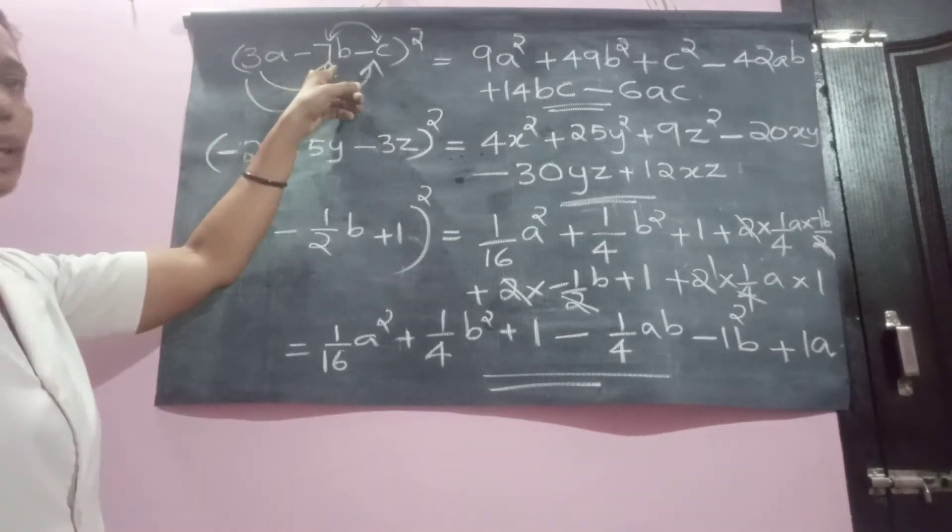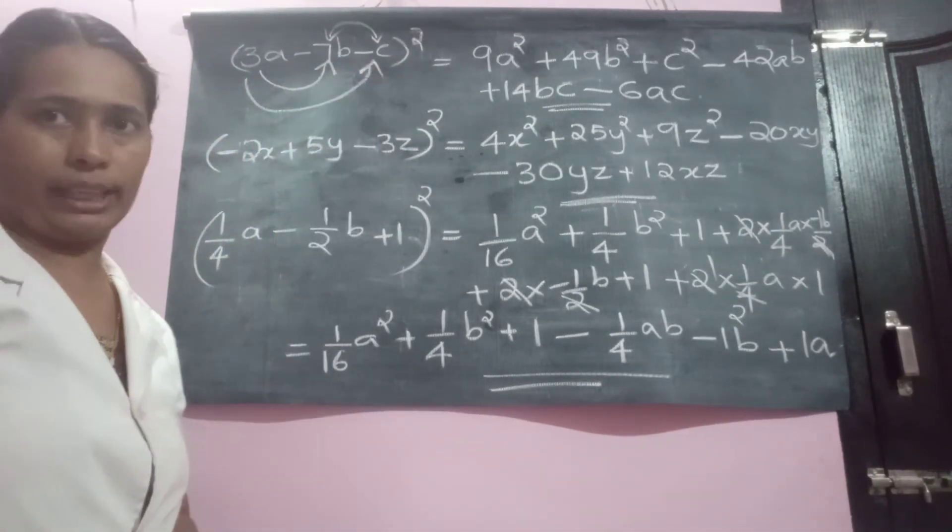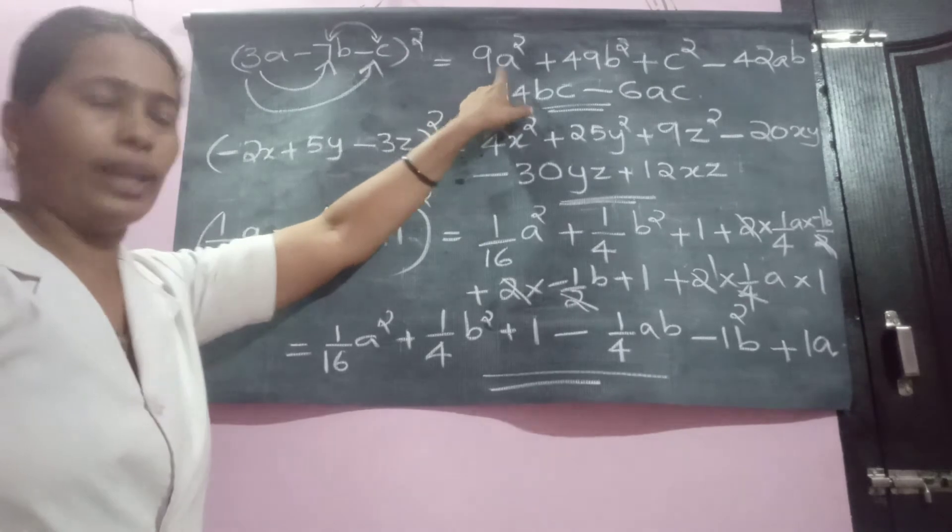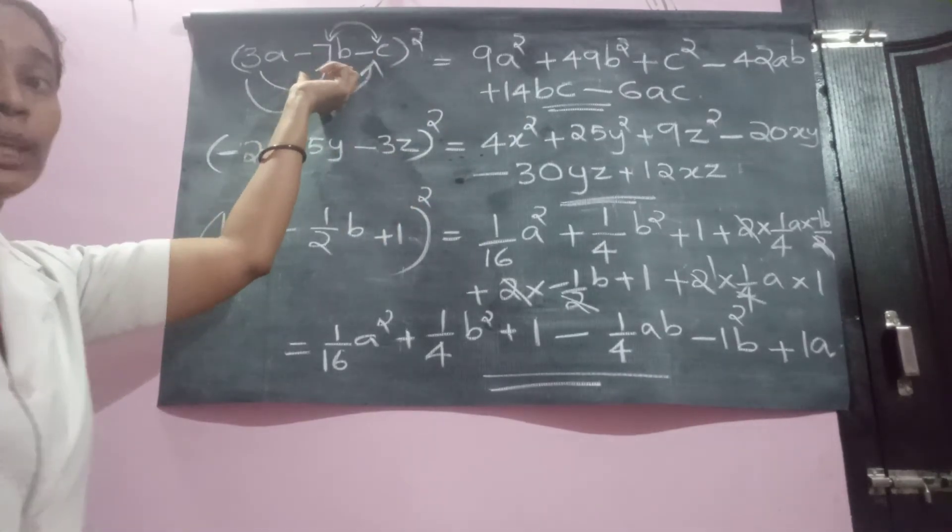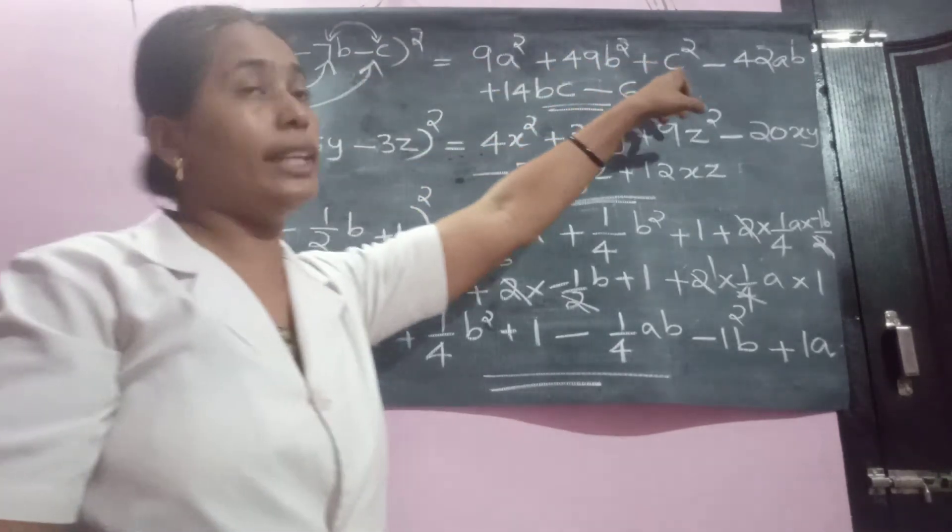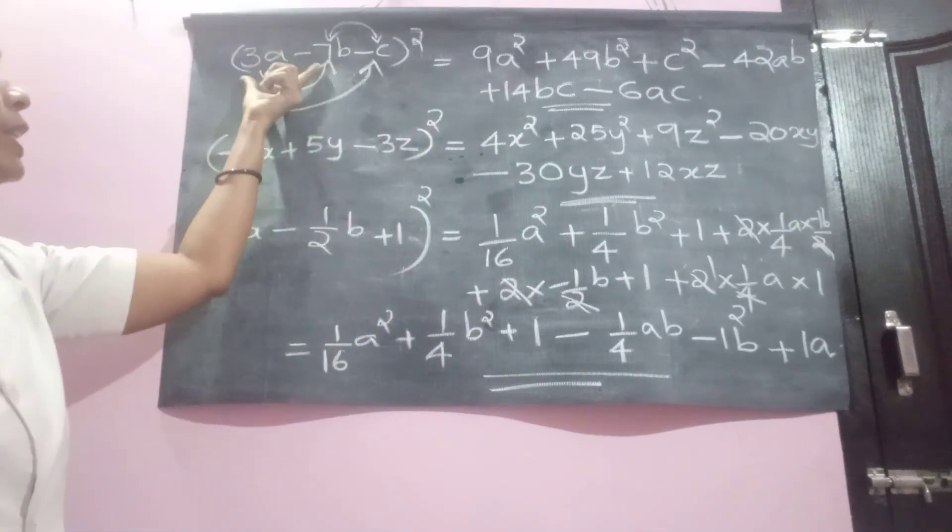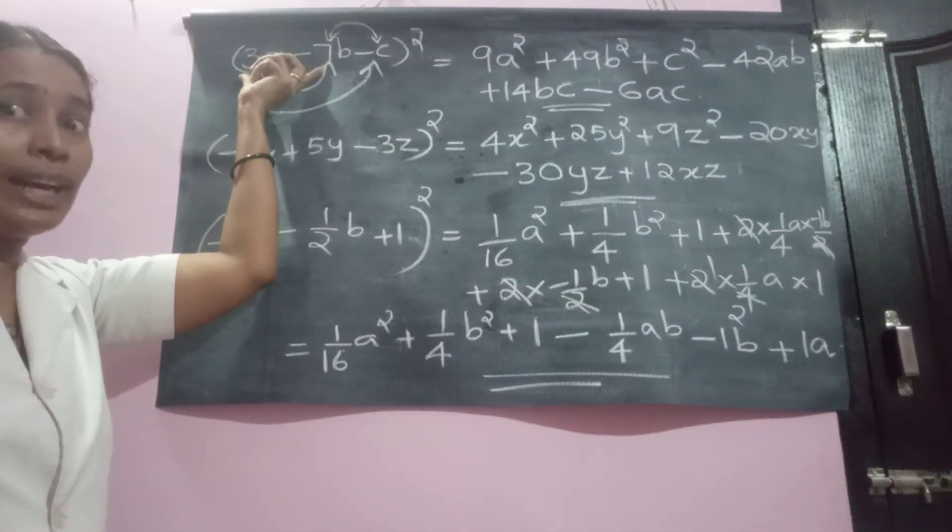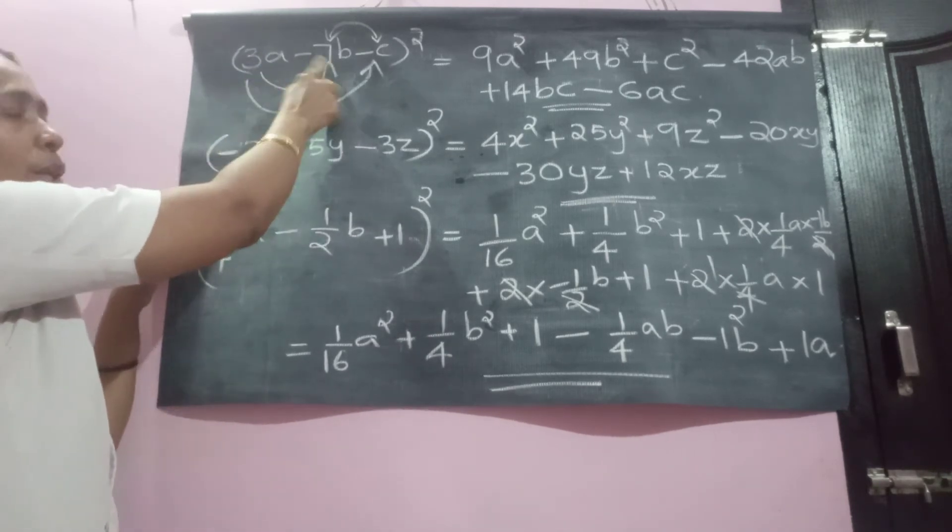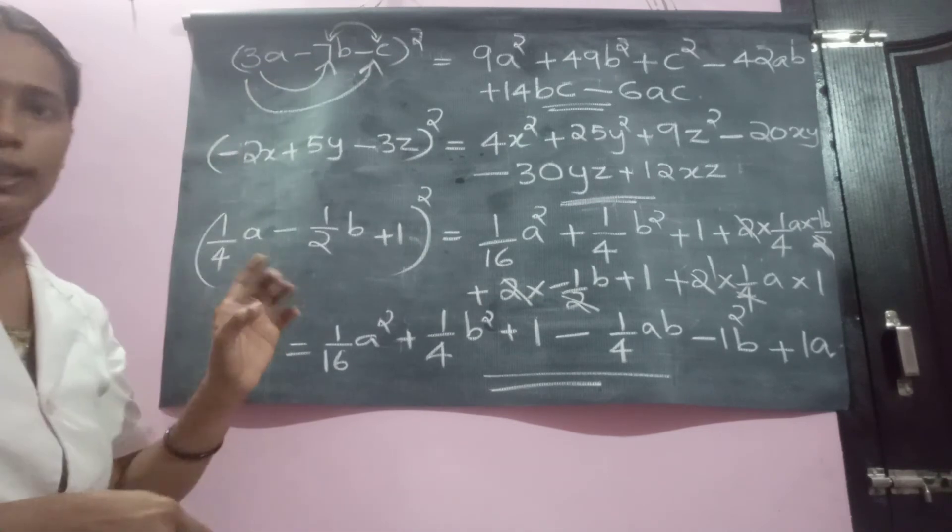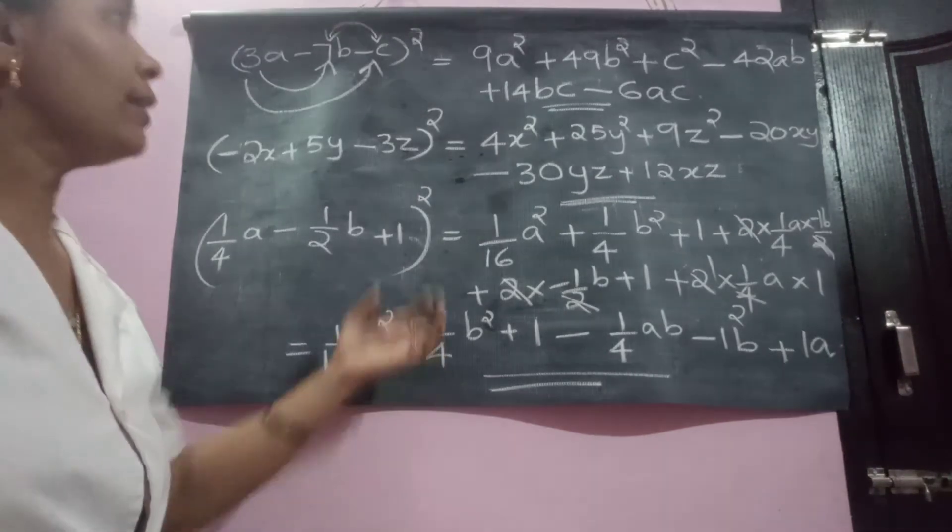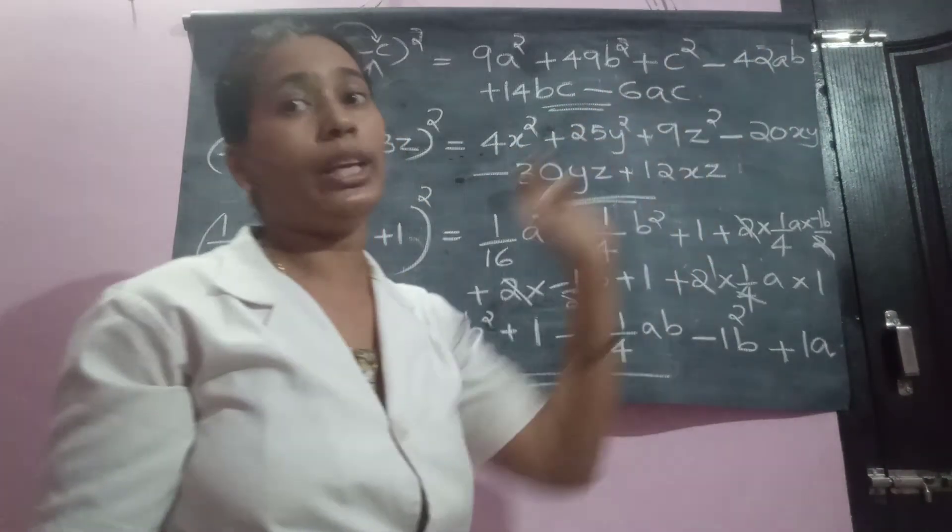Here, 3A minus 7B minus C, the whole square. First, 3A whole square. 3A whole square is 9A square. Square of negative 7B is positive 49B square. Square of negative C is positive C square. Then product of first two is negative 21AB. First, you multiply sine. Sine is negative. Number 7 into 3, 21. Variables AB. Then what we have to do? Double it. 2AB required. So, minus 42AB. 21 into 2 is 42AB.